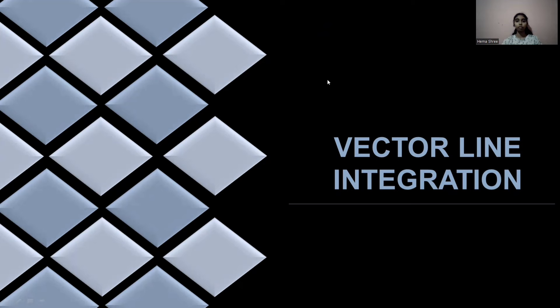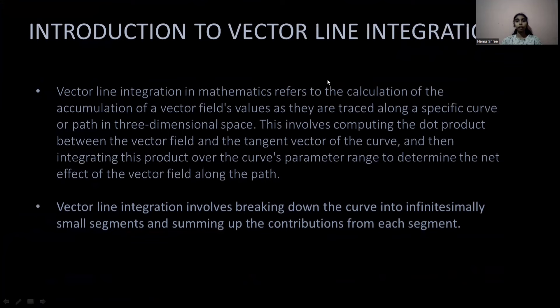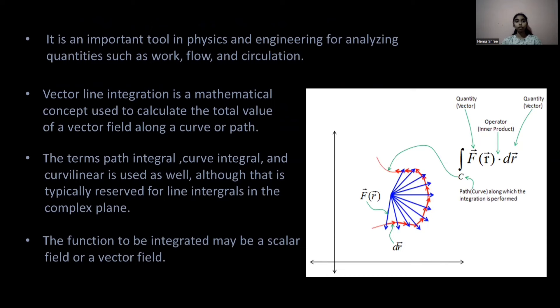Today I will be telling you about Vector Line Integration. Vector Line Integration in mathematics refers to the calculation of accumulation of a vector field's value as they are placed along a specific curve or path in three-dimensional space. This involves computing the dot product between the vector field and the tangent vector of the curve, then integrating over the curve's parameter range to determine the net effect of the vector field along the path. It involves breaking down curves into small segments and summing up the contributions from each segment. It is an important tool in physics and engineering for analyzing quantities such as work, flow, and circulation.